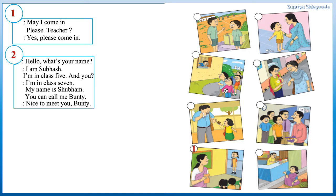Hello, what's your name? I am Subhash. I am in class 5, and you? I am in class 7. My name is Shubham. You can call me Bunty. Nice to meet you, Bunty. Find out the proper picture for this conversation. Ya sawada sahti yogethe chitra nivra.